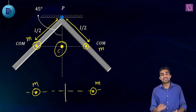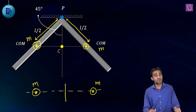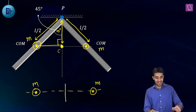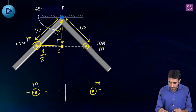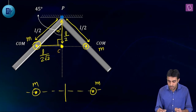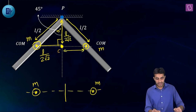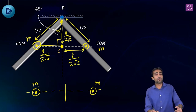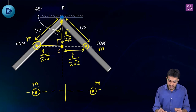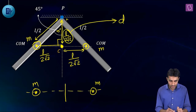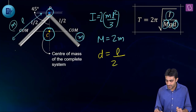With two equal masses at L/2 from P at 90° to each other, their combined center of mass C lies at the midpoint. Using the right-angle triangle with hypotenuse L/2 and 45° angle, the distance from P to C is d = (L/2)·sin45° = L/(2√2).